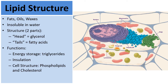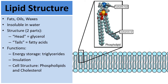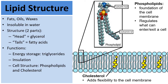Another function for lipids is in the structure of our cells. Here's a cell, and if we zoom in to the cell membrane, we see the basic unit of the cell membrane: a phospholipid. Phospholipids are the foundation of the cell membrane, which regulates what can enter and exit the cell. Also embedded within the cell membrane are cholesterol molecules, which are very important in adding flexibility to the cell membrane. So lipids are the very foundation of our cells.